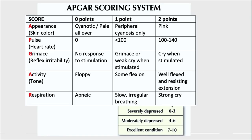The APGAR scoring system: A stands for Appearance, P for Pulse, G for Grimace, A for Activity, and R for Respiration. Each criterion is scored from 0 to 2. A total score of 0 to 3 indicates severely depressed condition; 4 to 6 is moderately depressed; and 7 to 10 is excellent condition.